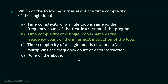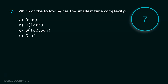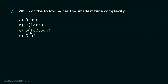Now let's move to question number 9, and your time starts now. Stop. The correct option is option C. Out of all these time complexities, Big O of log log N is clearly the smallest.